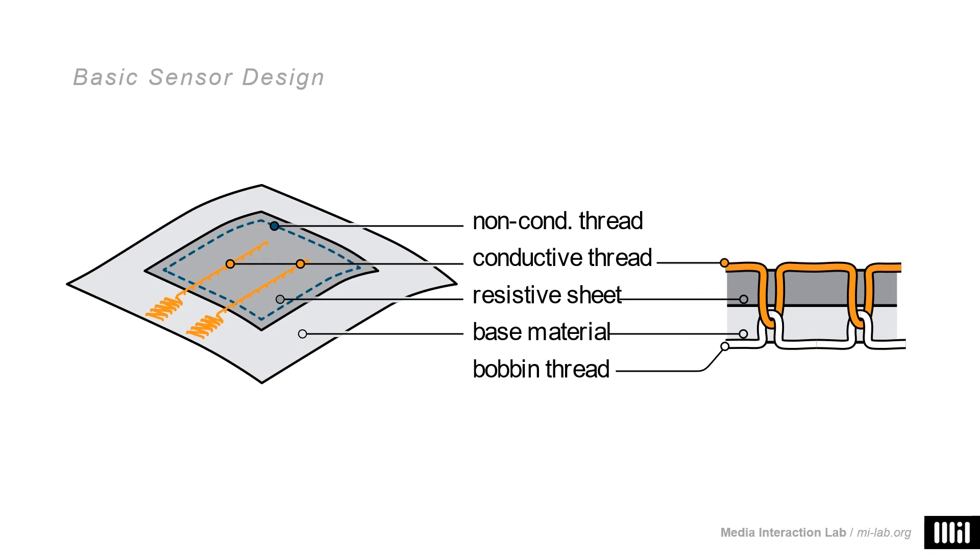Here you can see the basic design of our sensor. We have a backing material where the sensor is applied upon. We have a carbon-based semi-conductive material for the resistive sheet, and we have two electrodes made from conductive yarn, which is looped with a bobbin thread on the backside.